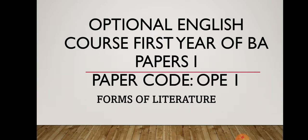Generally, till your 12th standard you have some compulsory subjects. Only the branch that you choose is the optional one. You either go to science, arts, or commerce. In your 12th you may have one optional subject such as economics, history, sociology — out of these three you might opt one or two subjects.